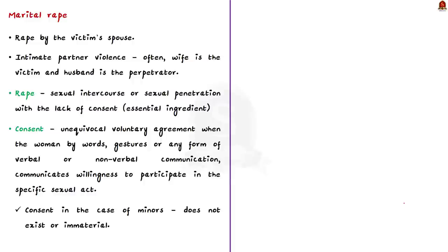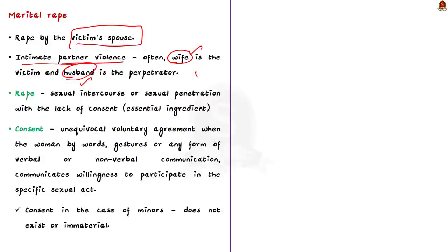Marital rape refers to rape committed when the perpetrator is the victim's spouse. It is an intimate partner crime, and in the Indian context most often the victim is the wife and the perpetrator is the husband. The IPC defines rape as sexual intercourse or sexual penetration when there is a lack of consent. An essential ingredient to prove the crime of rape is to prove the lack of consent. According to the IPC, consent means an unequivocal voluntary agreement communicated by the woman about her willingness to participate in the specific sexual act.